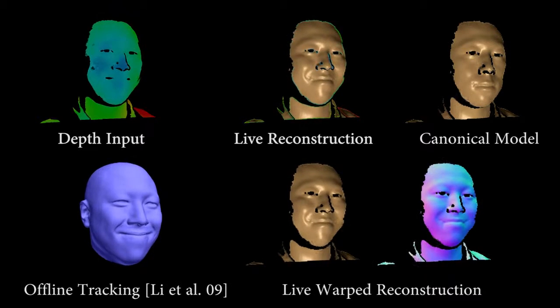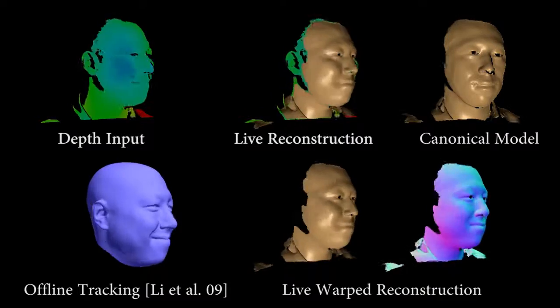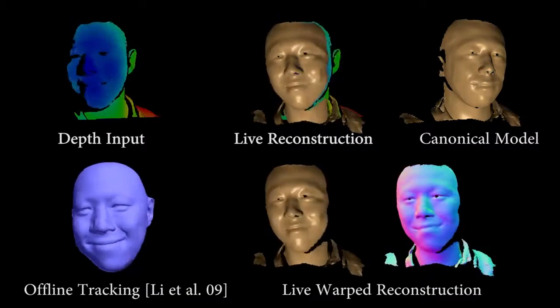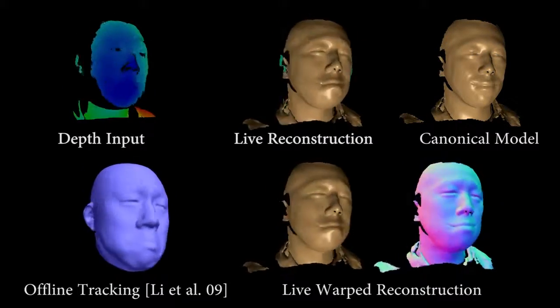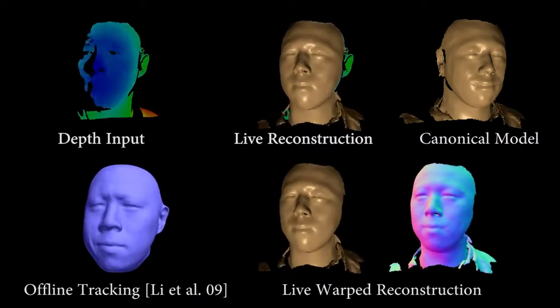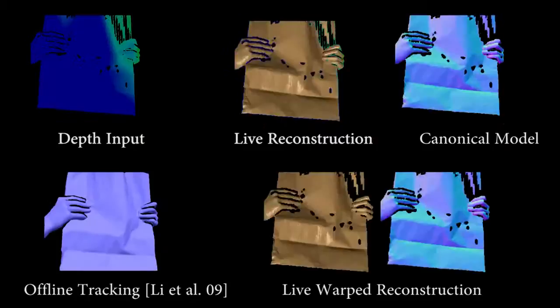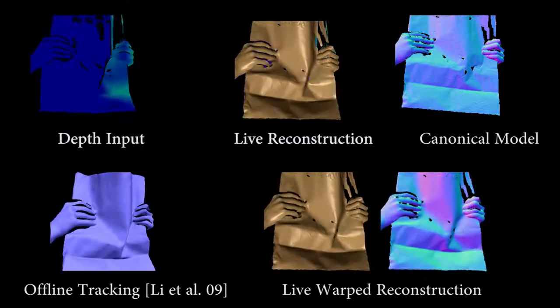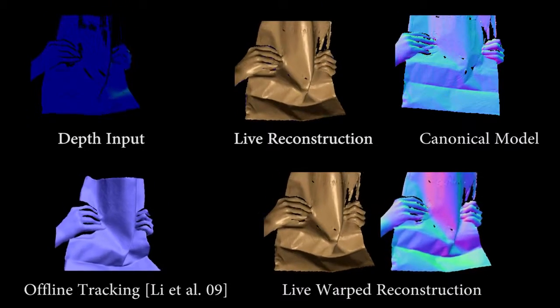Here, we show a comparison to the offline template tracking method of Li et al. We achieve comparable results with an average error below 1 mm in observable surface regions.